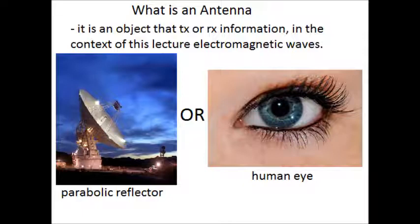The antenna is like you are used to seeing, like on the left, the parabolic reflector. It is a giant satellite dish that can receive or transmit RF radiation.